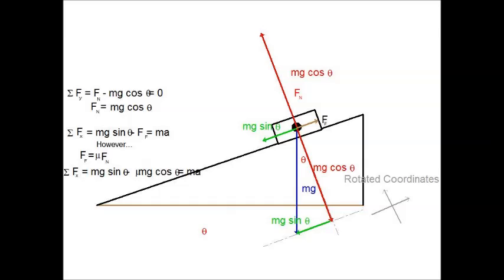Now we notice something. We notice m is common to all the terms, so guess what? We get rid of it, we obliterate it, cancel it out. So, we also notice that g is common to two of the remaining terms, so that can be factored out. Once we do that, we get our answer, which is a equals g times the quantity sine theta minus mu cosine theta.